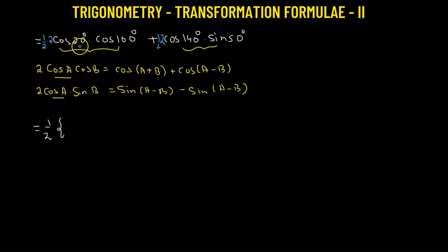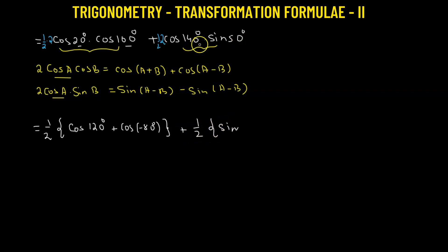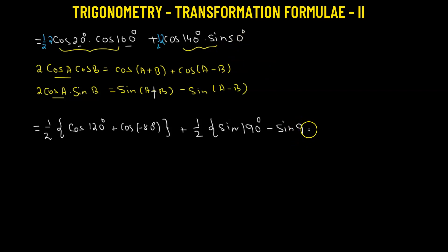For the first term, A = 20° and B = 100°, giving cosine(20 + 100) = cosine 120°, plus cosine(20 − 100) = cosine(−80°). For the second term, A = 140° and B = 50°, giving sine(140 + 50) = sine 190°, minus sine(140 − 50) = sine 90°.